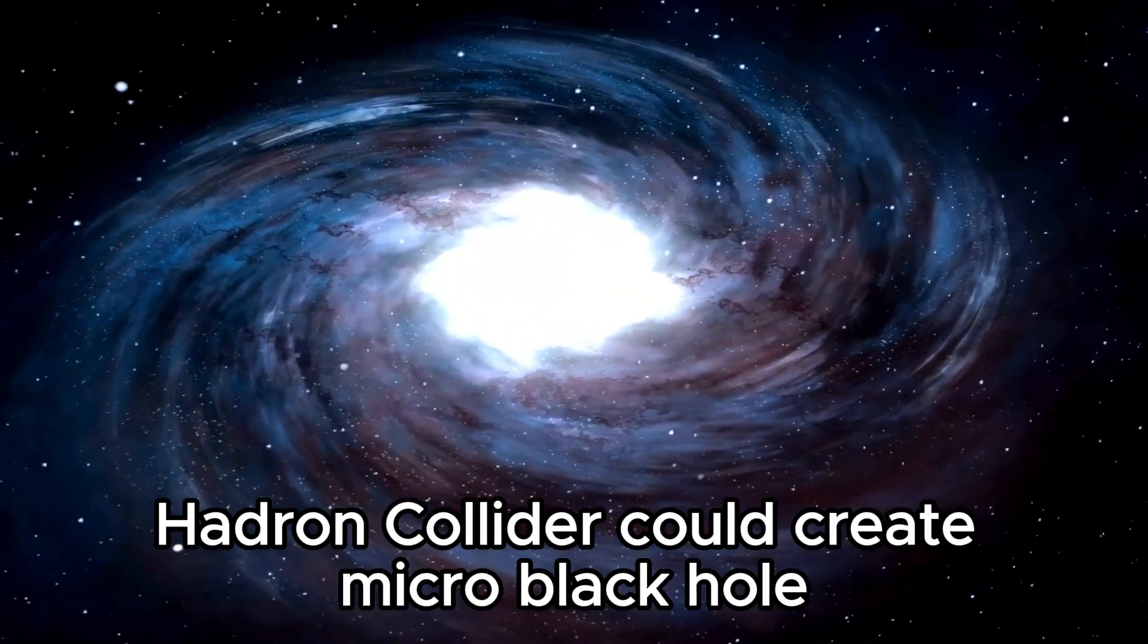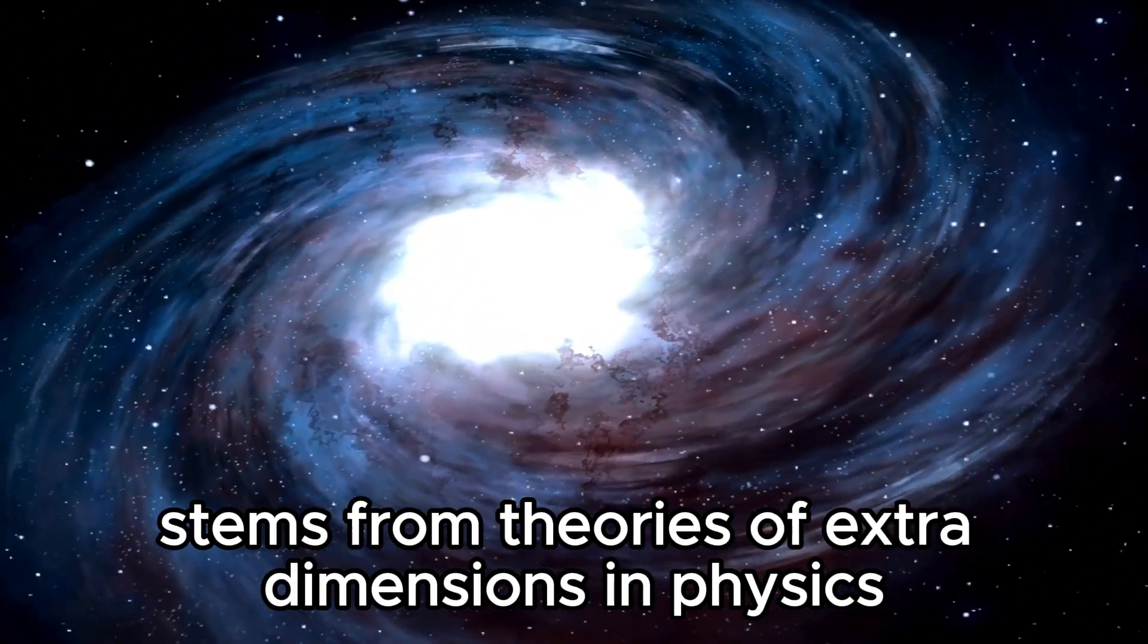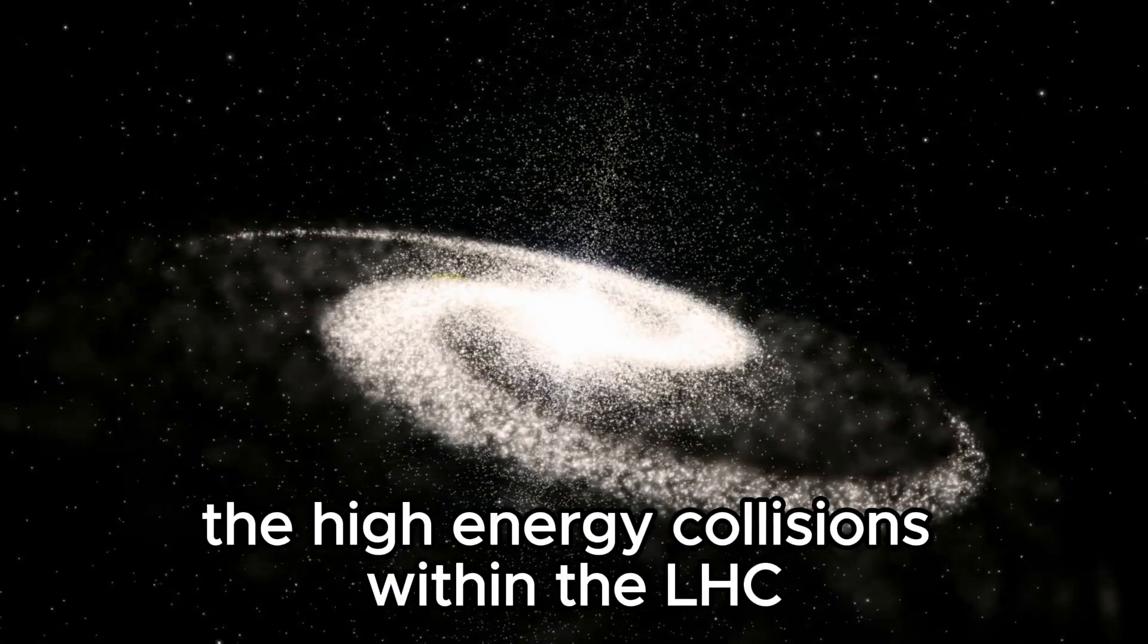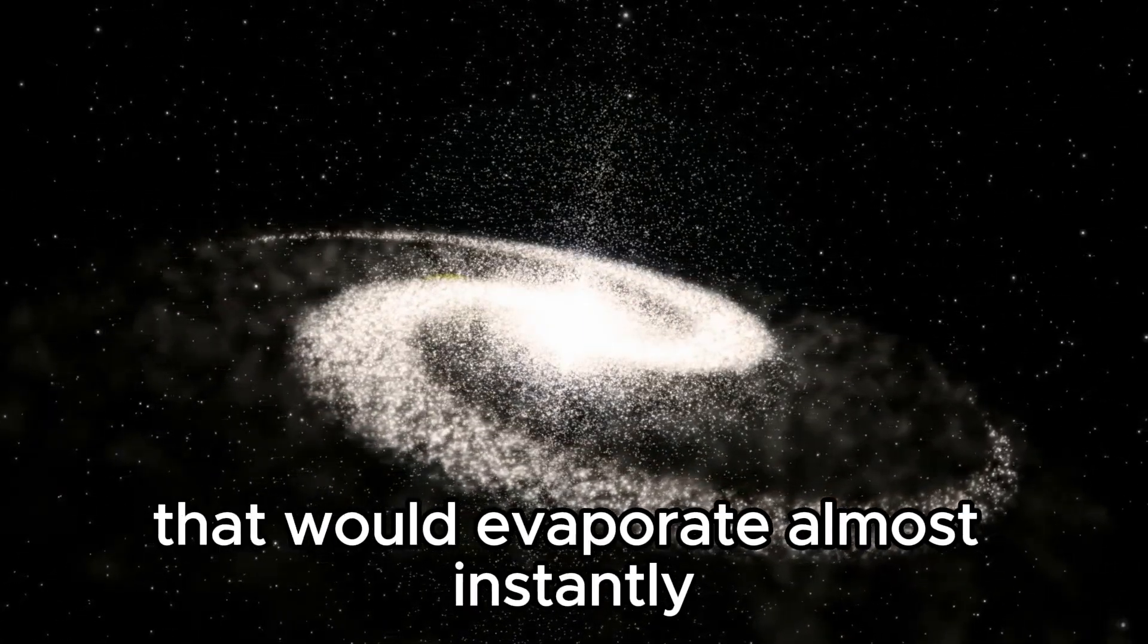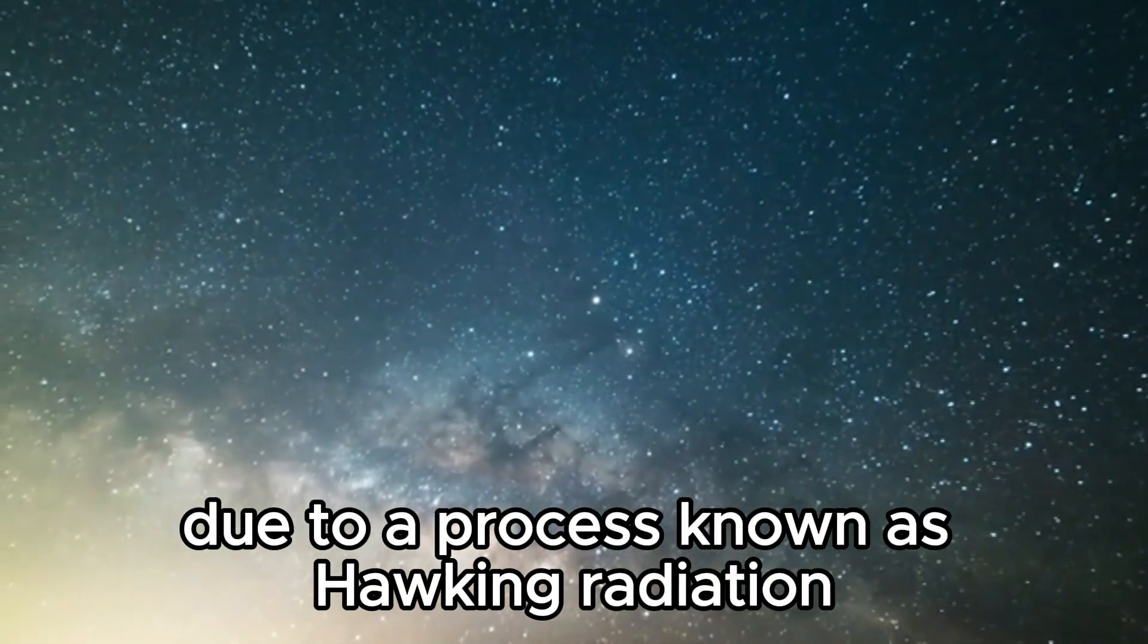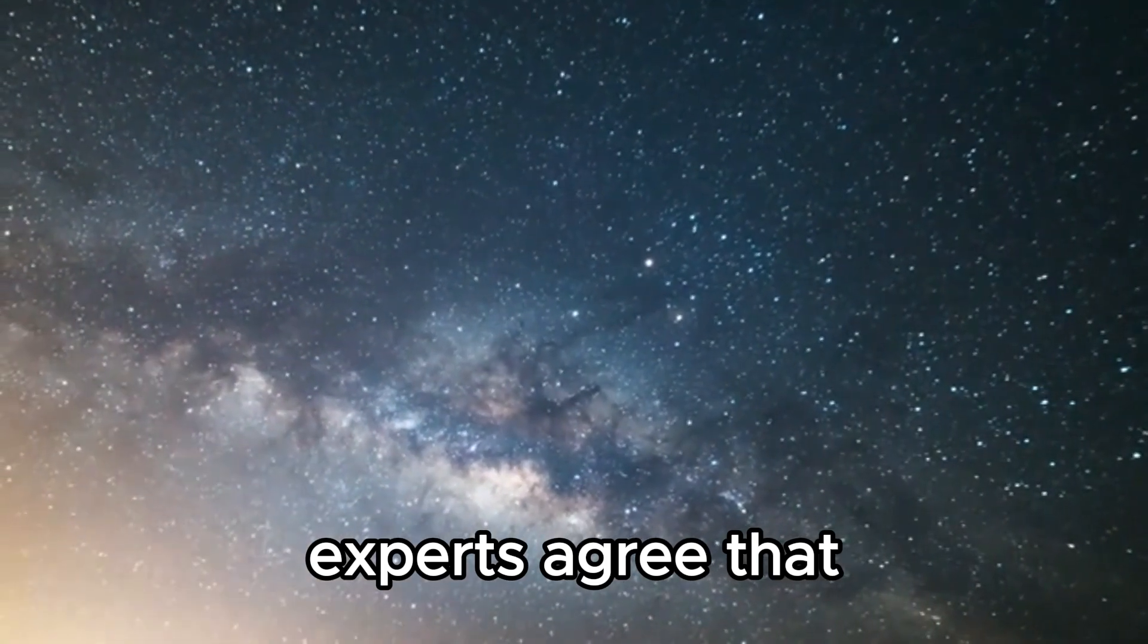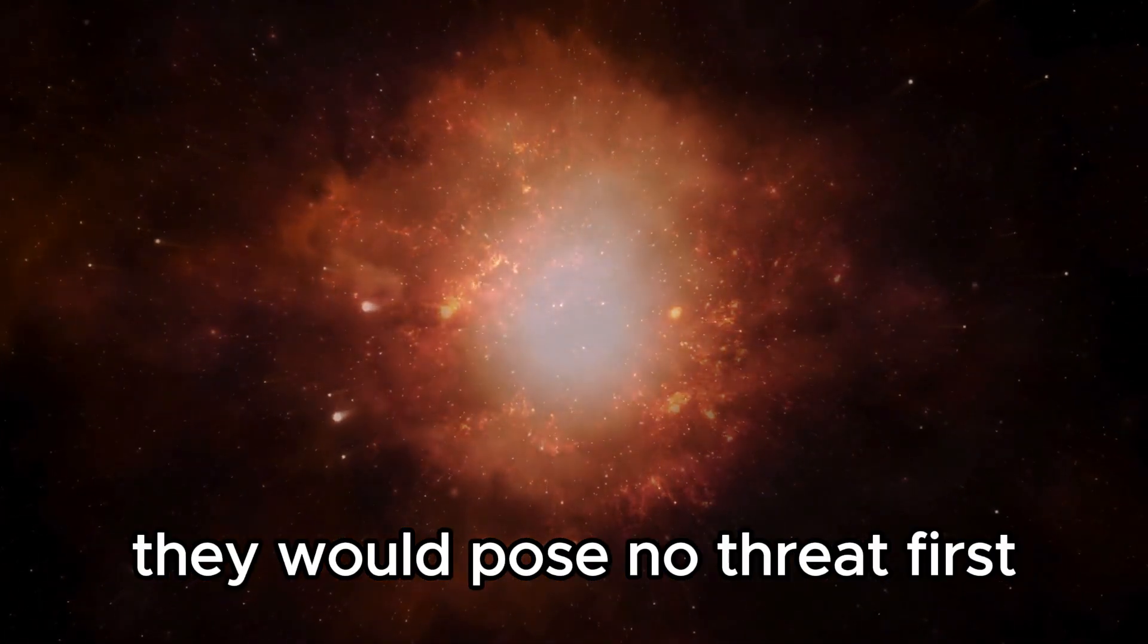The idea that the Large Hadron Collider could create micro black holes stems from theories of extra dimensions in physics. According to certain theoretical models, the high-energy collisions within the LHC could produce tiny black holes that would evaporate almost instantly due to a process known as Hawking radiation, named after physicist Stephen Hawking. Experts agree that if micro black holes were ever created at the LHC, they would pose no threat.